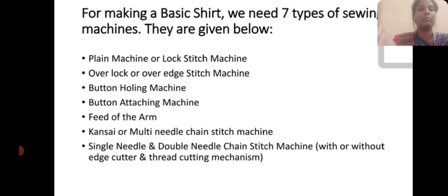For making a basic shirt, we need 7 types of sewing machines. They are: plain stitch machine or lockstitch machine; overlock or over-edge stitching machine; buttonhole machine; button attachment machine; feed of the arm; single needle or double needle chain stitch machine; and with or without edge cutter and thread cutting mechanism. Thank you for watching this video.